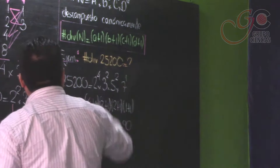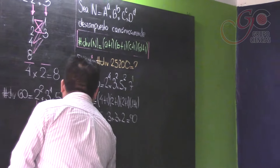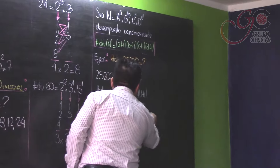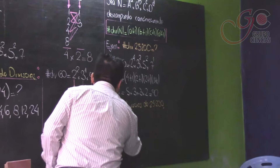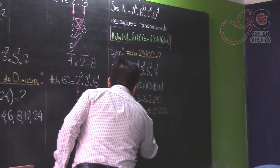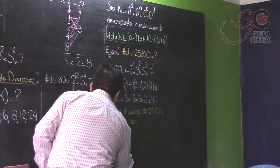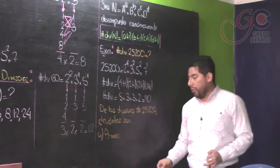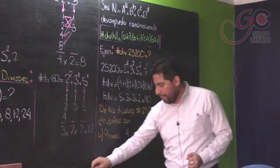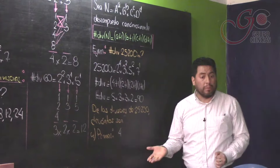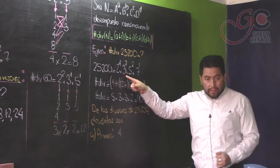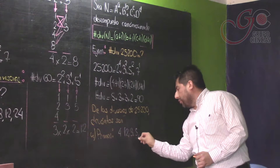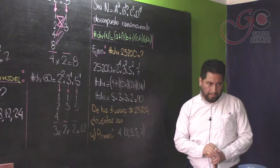Veamos ahora algunas preguntas respecto de sus divisores. De los divisores de 25.200, ¿cuántos de ellos son primos? Los divisores primos son las bases de la descomposición canónica: el 2, el 3, el 5 y el 7. Entonces, el número 25.200 va a tener 4 divisores primos. Los divisores primos son las bases de su descomposición canónica.